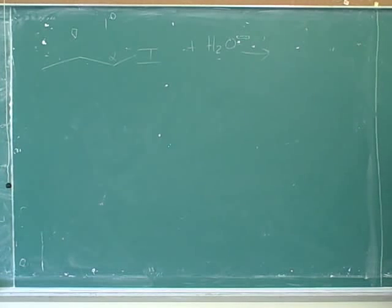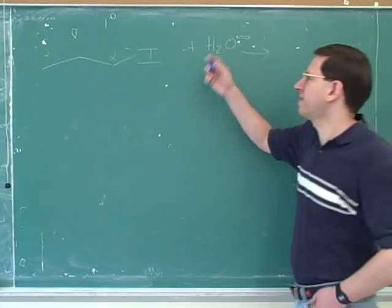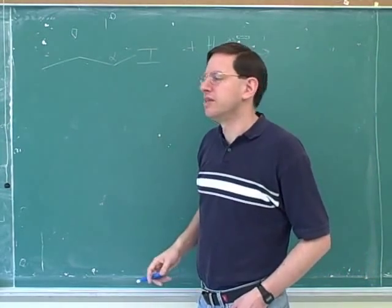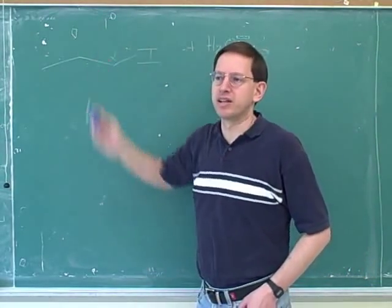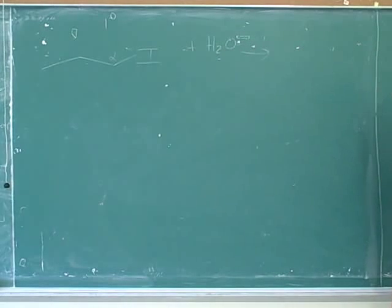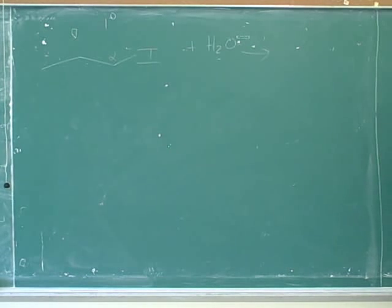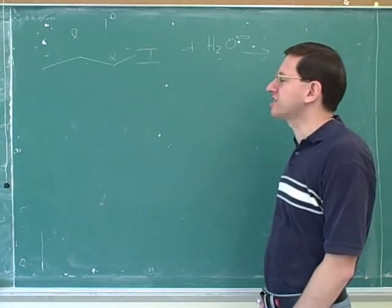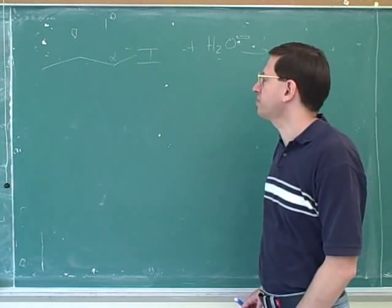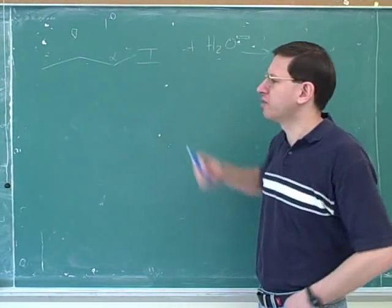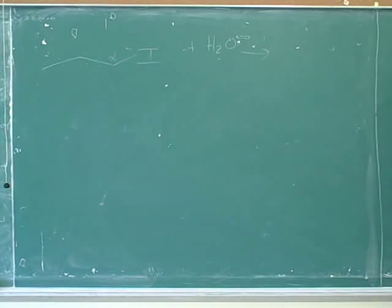No matter what the nucleophile is, this could never do an SN1. This substrate is the whole electrophilic molecule. So if it can't do an SN1, the leaving group doesn't want to leave for whatever reason. But then, why would the leaving group leave, since this is normally a good leaving group? Remind me, what is the big obstacle to an SN2 reaction?